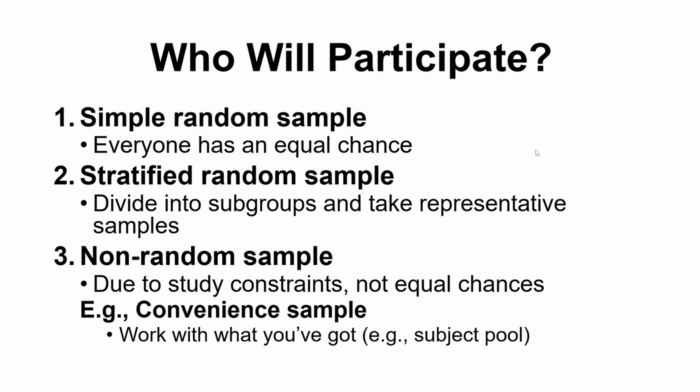A simple random sample is pretty much impossible to do in practice — there's almost always going to be some kind of limitation. So this is our ideal, what we aim for, but it isn't always attainable. Another option would be a stratified random sample, which is really useful if you have a collection of individuals where there is a very small number of individuals of one particular subgroup type.